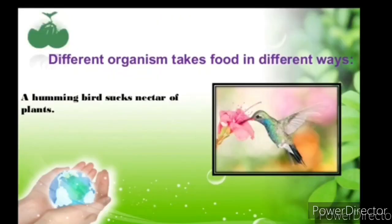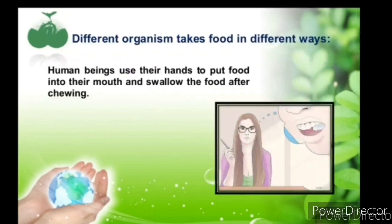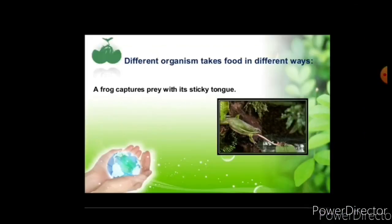Different organisms in our surroundings have different organs or special structures for taking food. For example, hummingbirds suck nectar from flowers with the help of their long beak. Human beings use their hands to put food into their mouth and swallow the food after chewing it. Frogs capture prey with their sticky tongue, and lizards and chameleons also use their tongue to catch their prey.